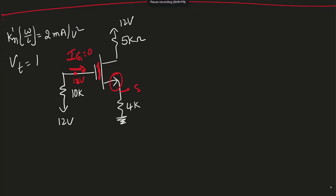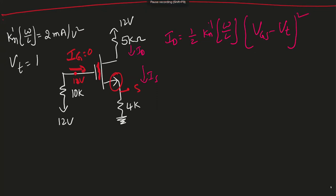We'll start solving the example by assuming this transistor is working in saturation mode. In saturation mode, the drain current and source current are both the same because there is no gate current. The equation for drain current is: ID = (1/2) · KN′ · (W/L) · (VGS − VT)². I know KN′ · (W/L) and VT, but I don't have VGS. VGS equals VG minus VS, and VG is 12 volts — since there is no current through that branch, there is no voltage drop, so VG is 12 volts.